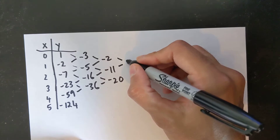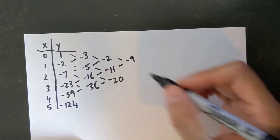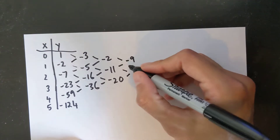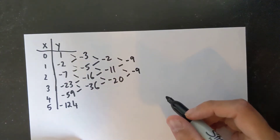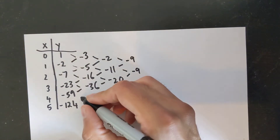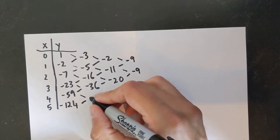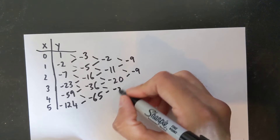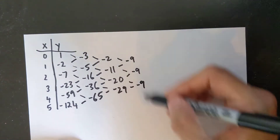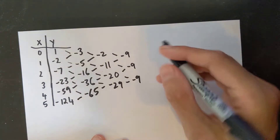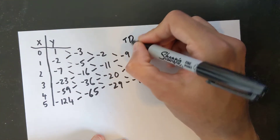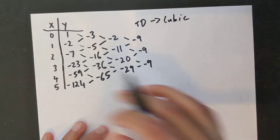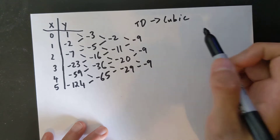Let's try third differences — this is going to be negative 9. Negative 11 minus negative 2 is negative 9. Negative 20 minus negative 11 is also negative 9. We could do the last one as well — it's not always necessary, but if it was a quadratic you'd have to. That gives negative 9 as well. So the third differences are the same, therefore it is a cubic equation, and from this table of values I need to find this cubic equation.